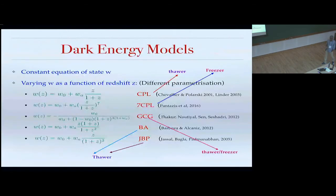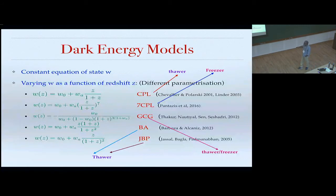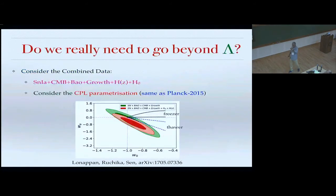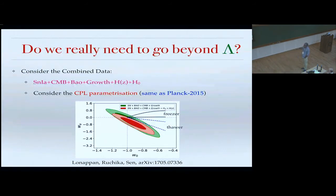Among the parametrizations: CPL is mostly a thawer parametrization; the 7CPL (CPL with a power of seven) is a freezer model; the GCG model can behave as both thawer or tracker depending on the WA parameter; the other two parametrizations are both thawer models. So different parametrizations have different behavior — thawer or freezer — and we'll see which are more allowed by observational data.